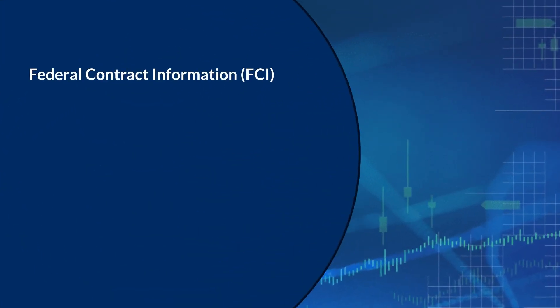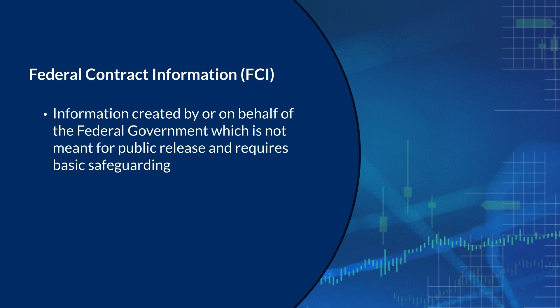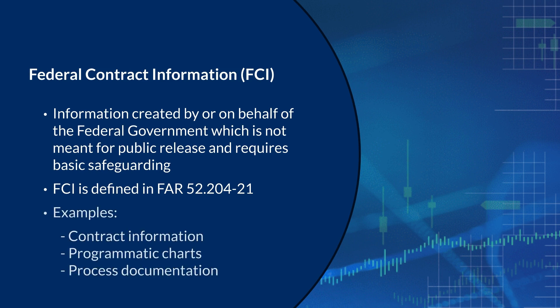Federal contract information is created by or on behalf of the federal government and requires basic safeguarding. FCI is defined in the Federal Acquisition Regulations Clause 52.204-21. Examples of FCI include contract information, programmatic charts, and process documentation.